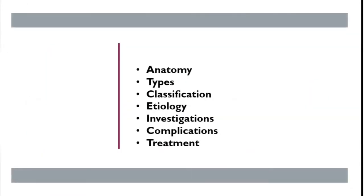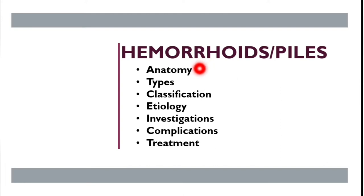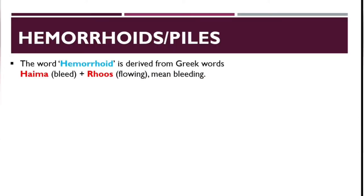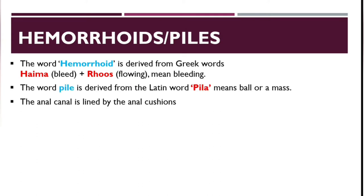In this video we are going to talk about hemorrhoids — anatomy, types, classification, etiology, investigations, complications, and management. The word 'hemorrhoid' comes from two Greek words: 'hyma' meaning bleed and 'rhoos' meaning flowing, so hemorrhoid means bleeding. The word 'piles' is derived from the Latin word 'pila,' which means a ball or a mass.